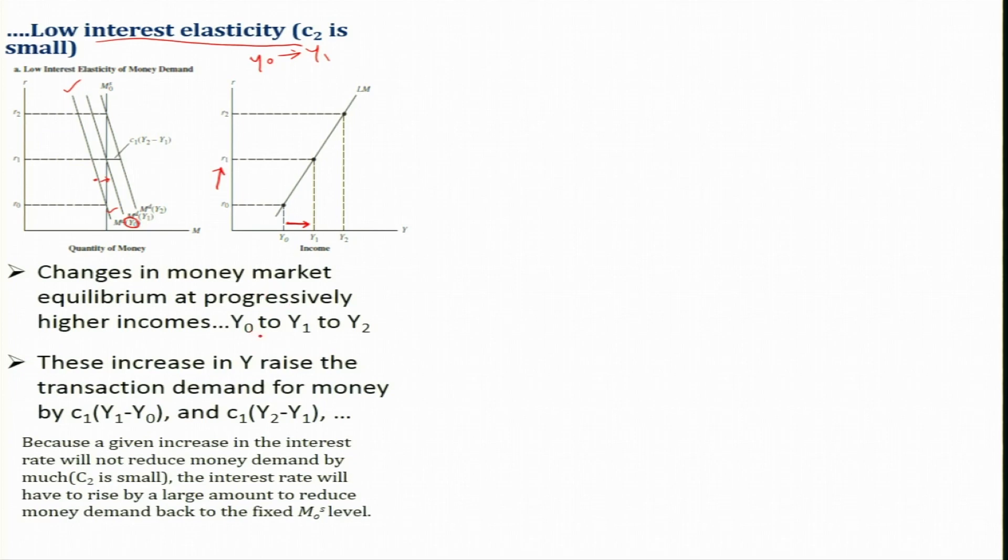Simply put, since interest elasticity is very small, due to increase in income money demand increases, but a large change in rate of interest is required to ensure money demand is restored to the initial equilibrium. Given the increase in interest rate will not reduce money demand by much because c2 is small, the interest rate will have to rise by a large amount to reduce money demand back to the fixed money supply level.